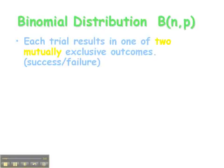In a binomial distribution, each trial results in one of two mutually exclusive outcomes — either we get a success or we have a failure. When dealing with binomial distributions, there are really only two outcomes, and these outcomes are mutually exclusive from one another. If we drew a Venn diagram, we would have separated circles — these are mutually exclusive events.